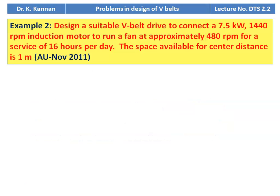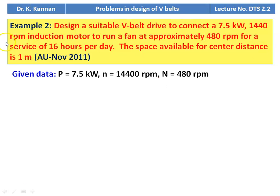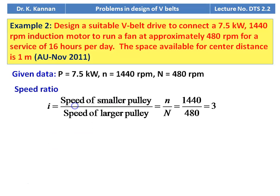Example 2 from the November 2011 question paper: Design a suitable V-belt drive to connect a 7.5 kW, 1440 RPM induction motor to run a fan at approximately 480 RPM for a service of 16 hours per day. The space available for the center distance is 1 meter. Given: power = 7.5 kW, motor speed = 1440 RPM, fan speed = 480 RPM.